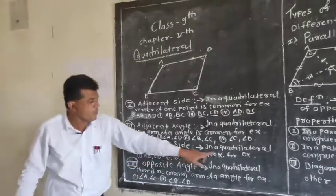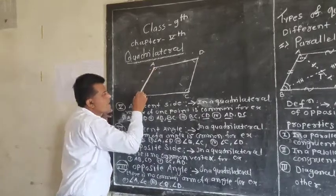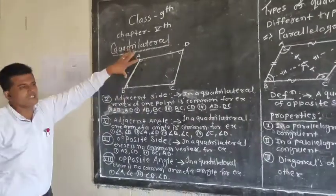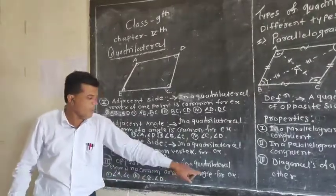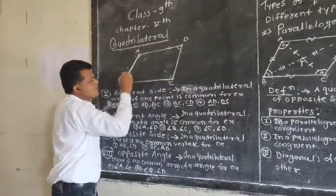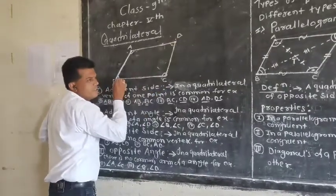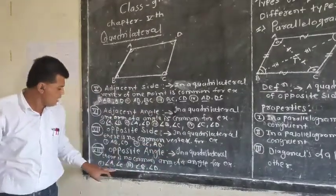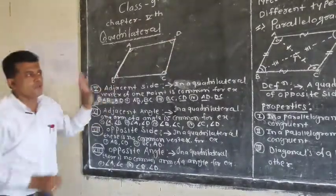For opposite sides in a quadrilateral, there is no common vertex. The opposite side pairs are AB and CD, and BC and AD — they have no common vertex. For opposite angles, there is no common arc. For example, angle A and angle C are opposite angles — BAD and BCD have no common arc. Similarly, angle B and angle D are opposite angles.